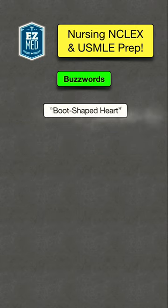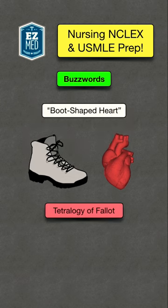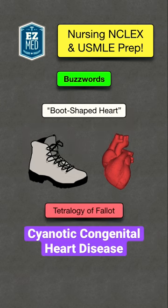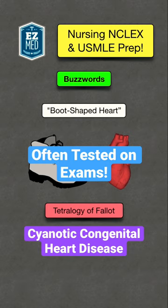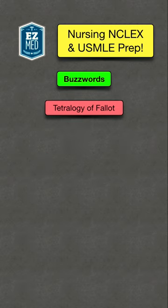If you see the buzzword 'boot-shaped heart' in a question stem to describe the heart on a chest x-ray, then you should think of Tetralogy of Fallot. Tetralogy of Fallot is the most common cyanotic congenital heart disease and is often tested on exams.